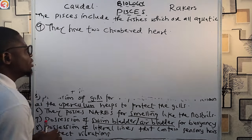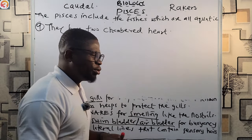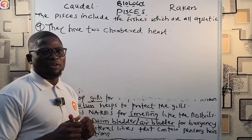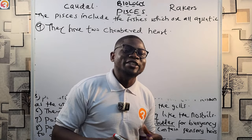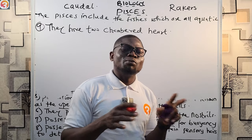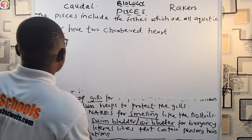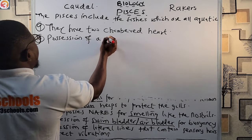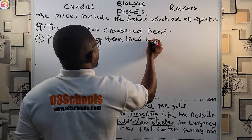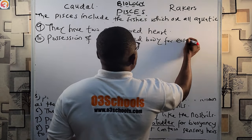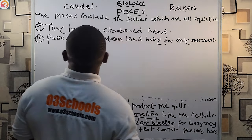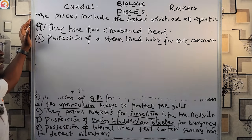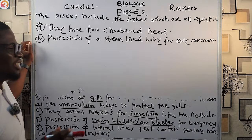Number ten: fishes possess a streamlined body. This is one of the major things that makes them very well adapted to the aquatic environment. Their streamlined body allows for easy movement in water — that's why everyone wants to swim like a fish.